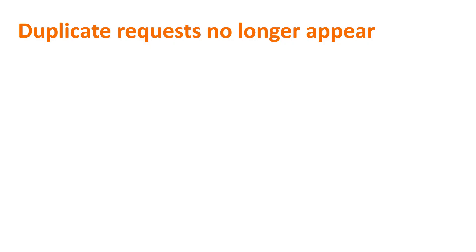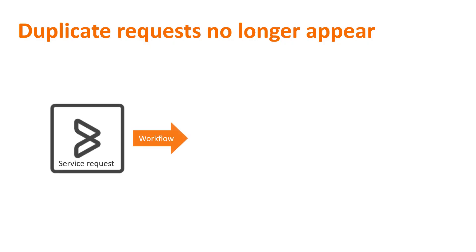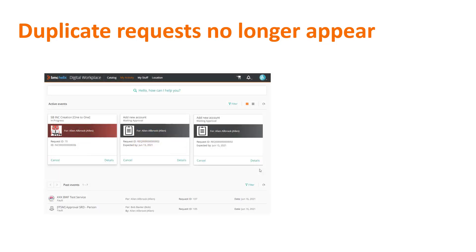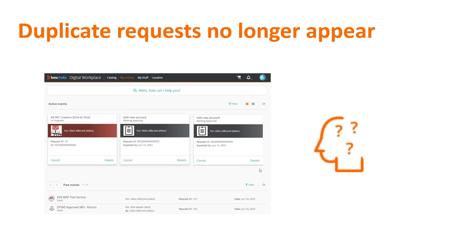Some service requests use workflows that automatically create a duplicate incident, work order, or change request. Previously, these duplicates appeared on the My Activity tab of the end-user console, causing confusion to users. In version 21.05, duplicate requests no longer appear to end-users.